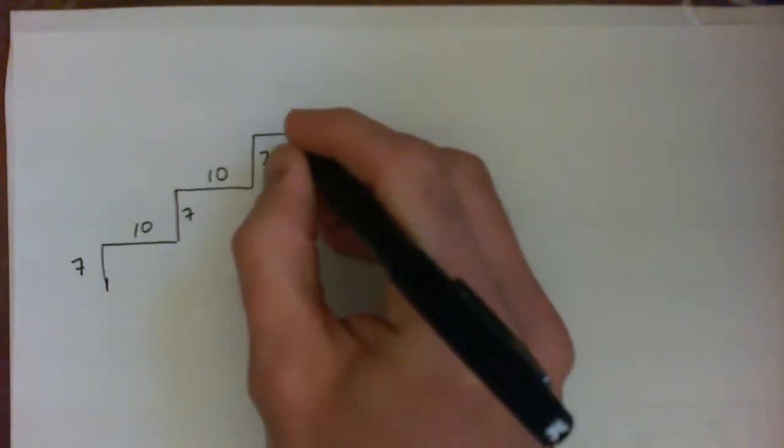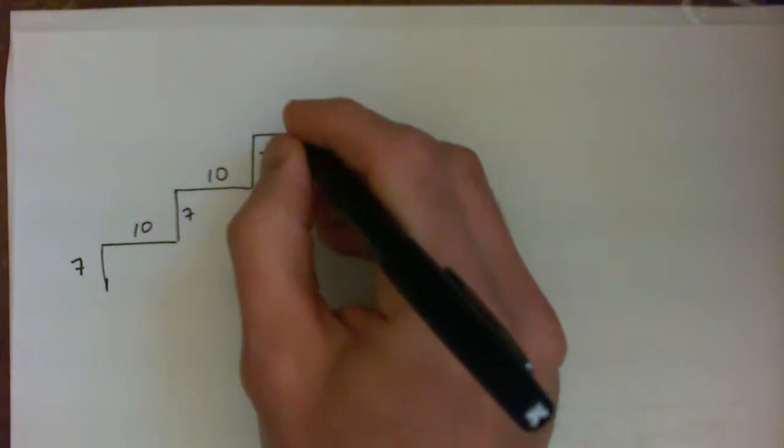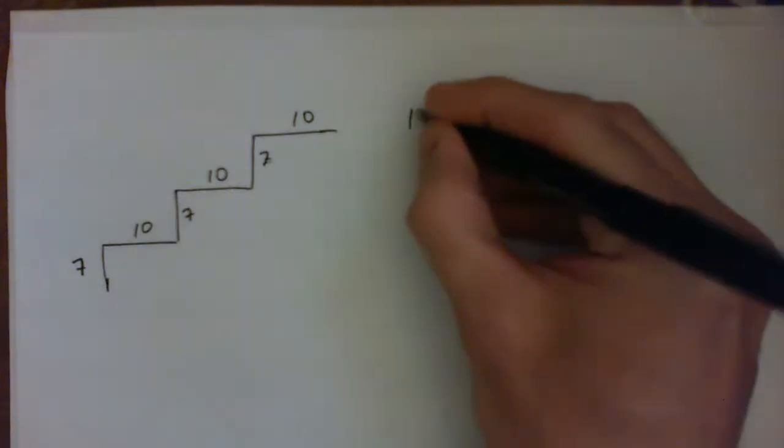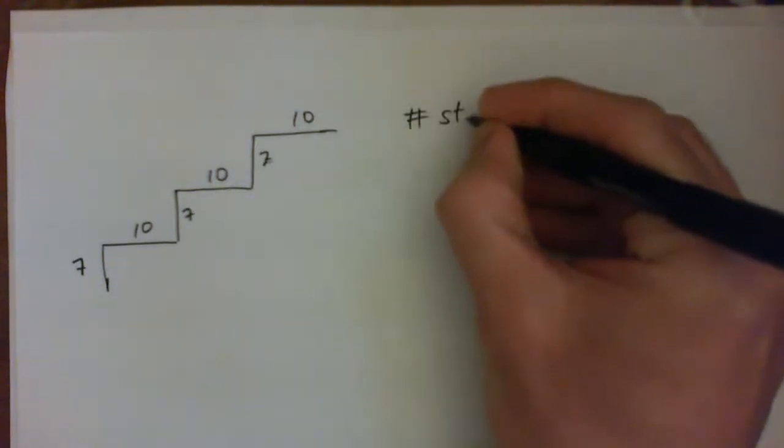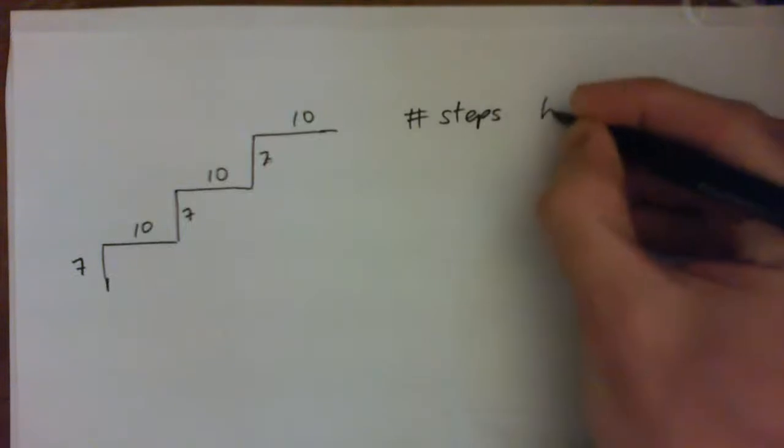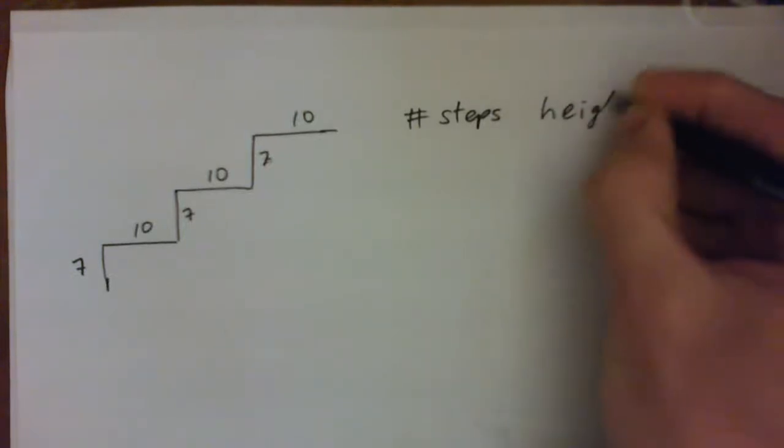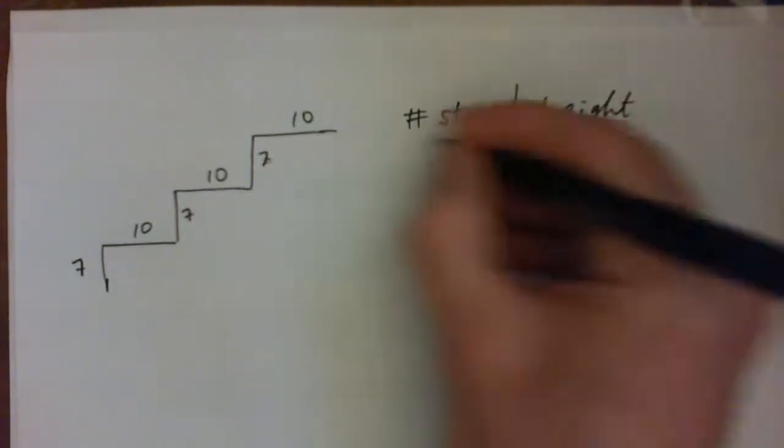So is the relationship between the height and the number of steps linear? Okay, so we'll look at the number of steps and then we'll look at the height. I guess I didn't really care about how far it went across.